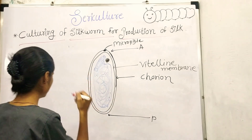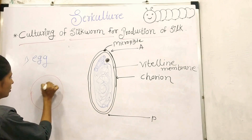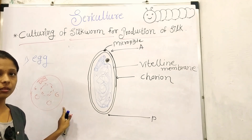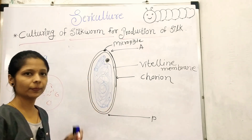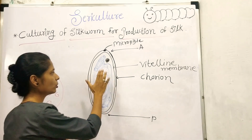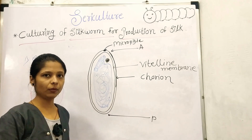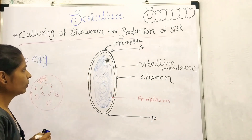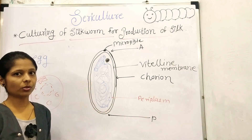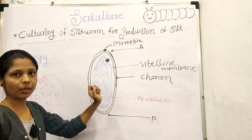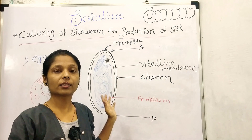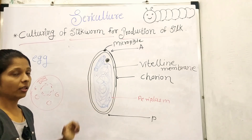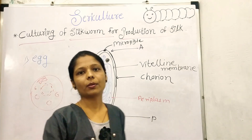The egg is also a type of cell, so it contains cytoplasm. However, due to the yolk material, the cytoplasm is pushed toward the periphery, and this thin peripheral layer is called the periplasm. To summarize the egg structure: the outermost covering is the chorion; beneath the chorion is the vitelline membrane; at the center the yolk is present, making it a centrolecithal egg; the nucleus is present; and the micropyle is present for sperm entry. The egg has an anterior end and a posterior end.